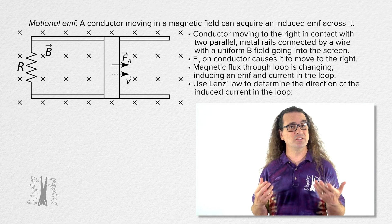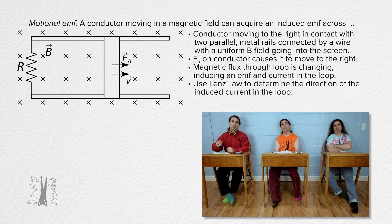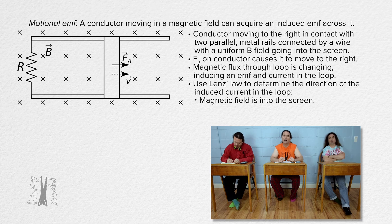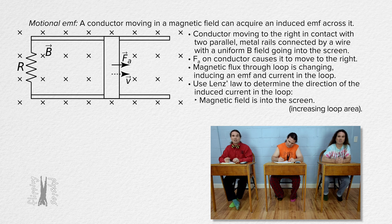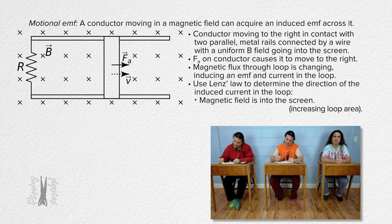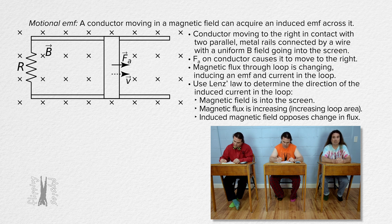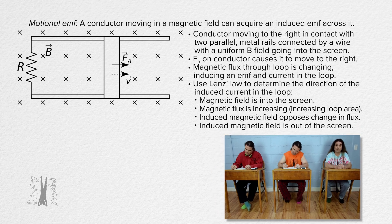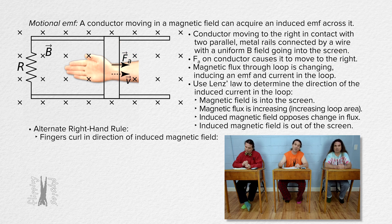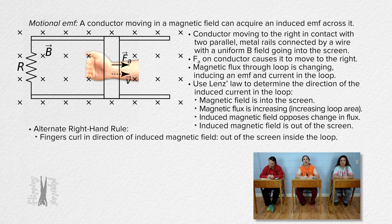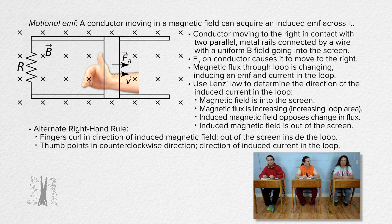We can use Lenz's law to determine the direction of the induced current in the loop. Bo, please determine the direction of the induced current in the loop. The magnetic field is into the screen. Because the conductor is moving to the right, the area of the conducting loop is increasing in size. That means the number of magnetic field lines passing through the conducting loop is increasing, which means the magnetic flux is increasing. According to Lenz's law, the induced magnetic field opposes the change in flux. Therefore, the induced magnetic field inside the conducting loop is out of the screen. Using the alternate right-hand rule, our fingers curl in the direction of the induced magnetic field, which is out of the screen inside the conducting loop. Our thumb points in the counterclockwise direction from this perspective, which is the direction of the induced current in the loop.